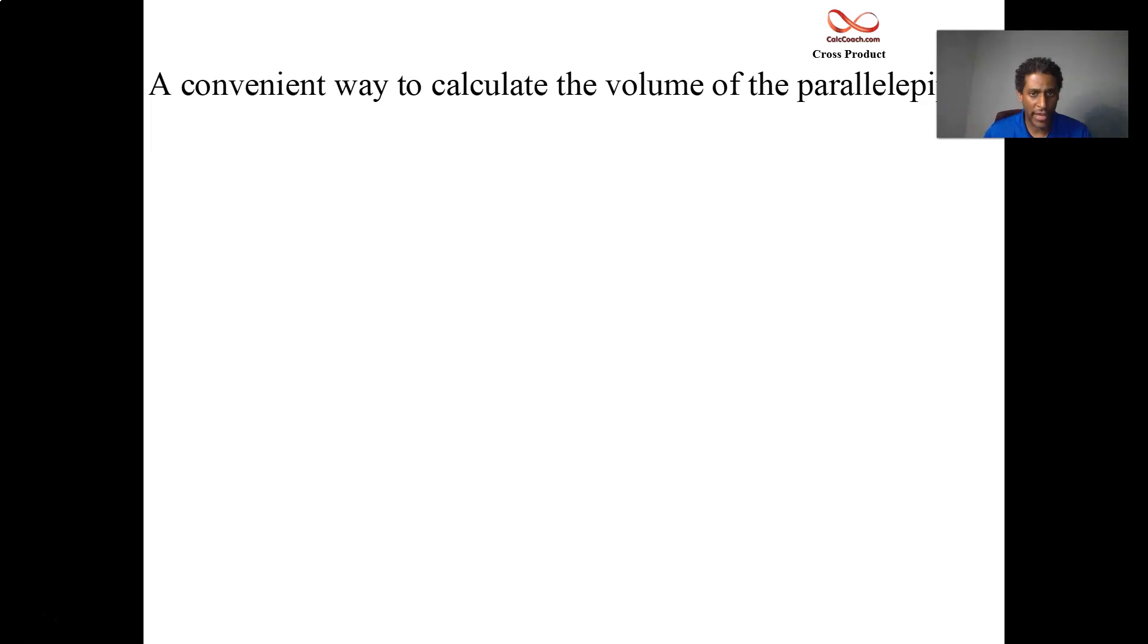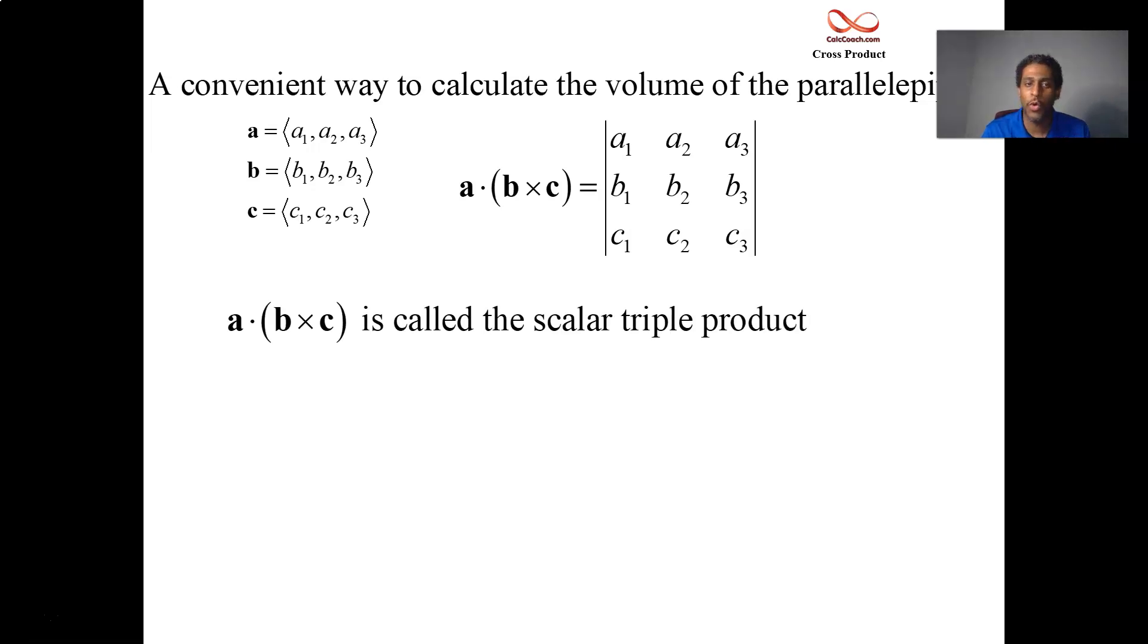You could also do this without even performing a cross product and a dot product. A convenient way to calculate this volume is by taking your three vectors and simply just making them the rows in a three by three matrix and finding the determinant of that matrix using whatever technique you like. The name of this dot with a cross is called the scalar triple product.